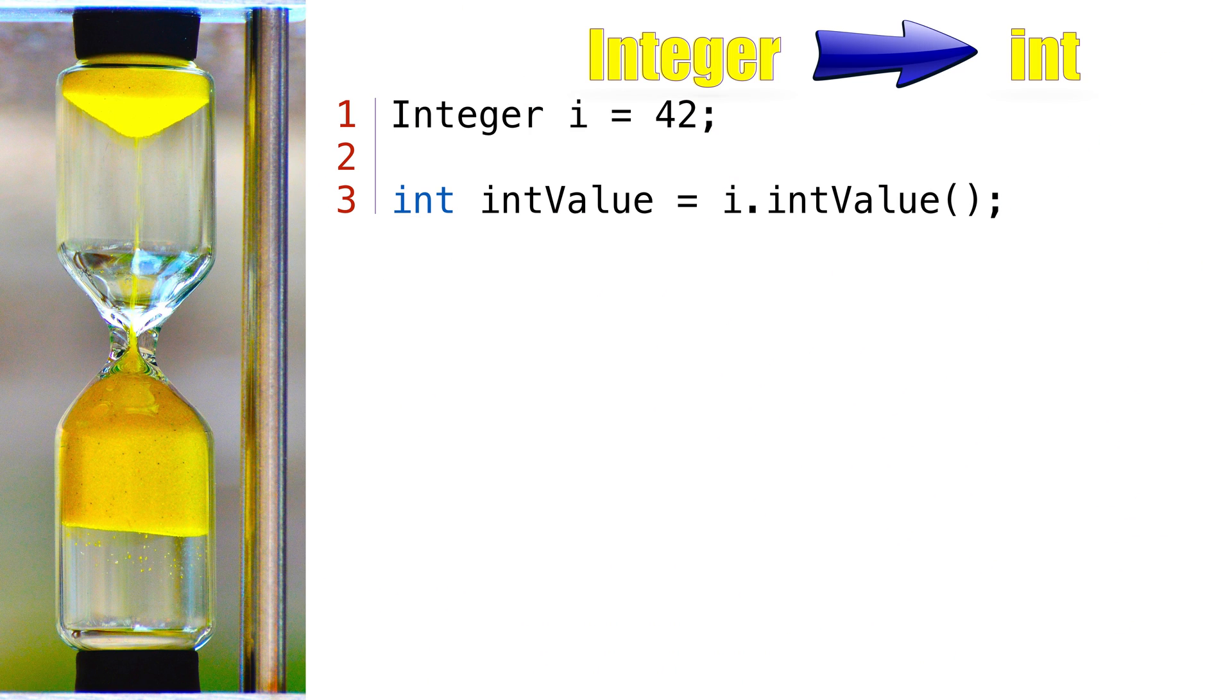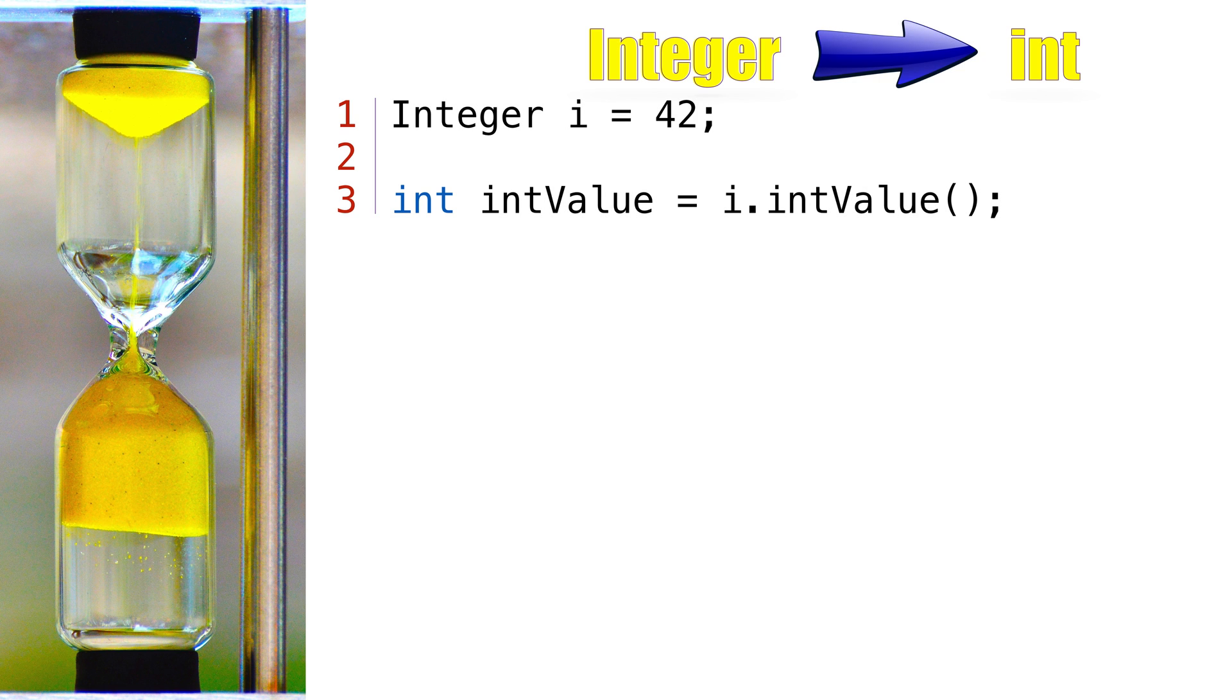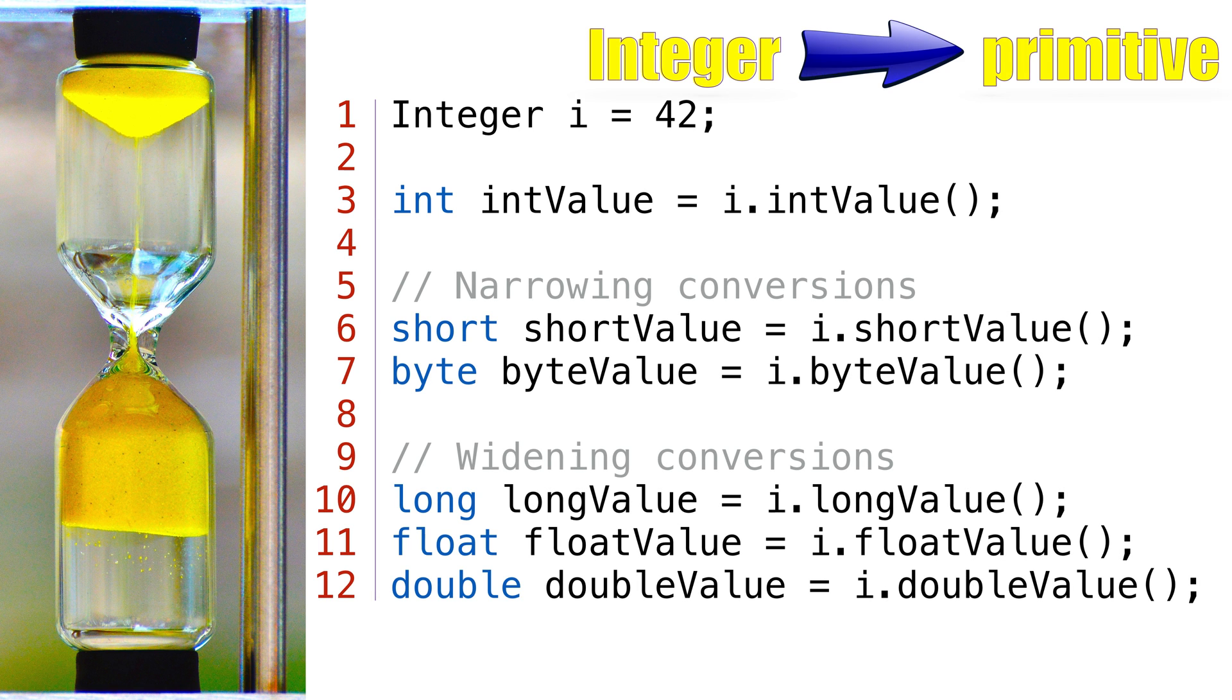The first set of Java number conversion methods available are methods to convert our Integer wrapper class to one of the primitive value types. The most useful conversion method is to convert the class to the matching Java primitive type. In this case, we'd convert an Integer to an int. We can also convert the integer to other primitive data types with varying consequences. If you convert the Integer class to a smaller primitive type, say a short, you're going to cause a narrowing conversion. This is the same narrowing conversion we saw when casting primitives to smaller primitives in the variables video. Converting to larger primitives causes a widening conversion.